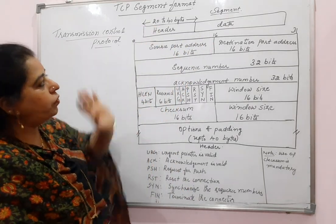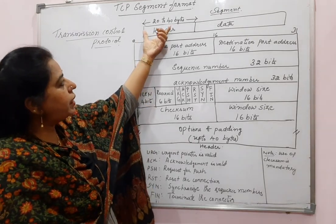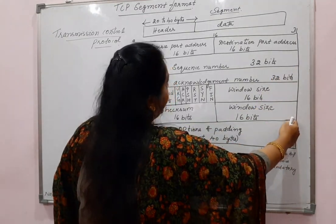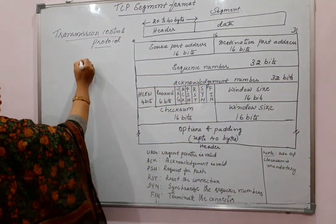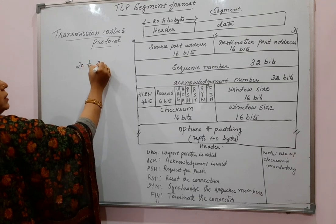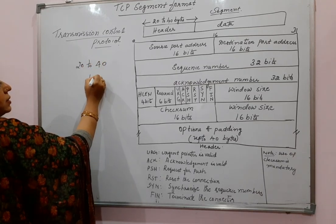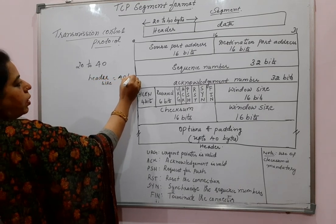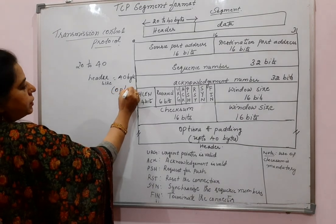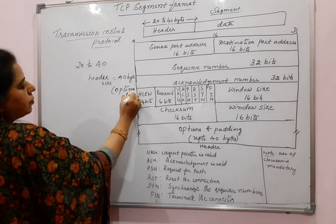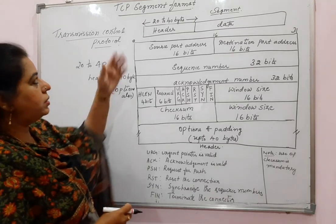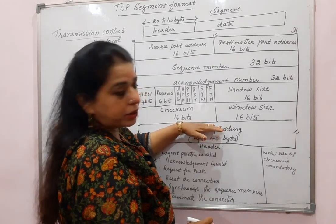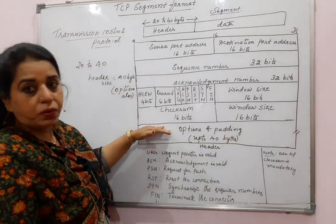The header is 20 to 40 bytes. The 20 bytes covers all the different fields in the header excluding the options. If the header size is 40 bytes, it includes the options as well. If the header size is the minimum — 20 bytes — then it excludes the options part; the last row can be ignored if it is only 20 bytes.